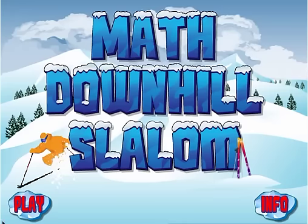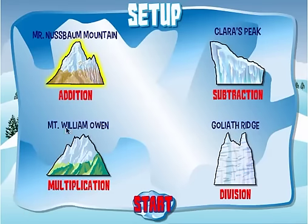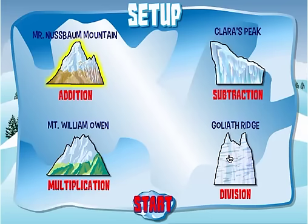The first thing you do is click play. In the setup, you choose whichever mountain you want to ski down. Mr. Nussbaum Mountain is for addition, Clara's Peak is for subtraction, Mount William Owen is for multiplication, and Goliath Ridge for division. Let's do multiplication — now click start.